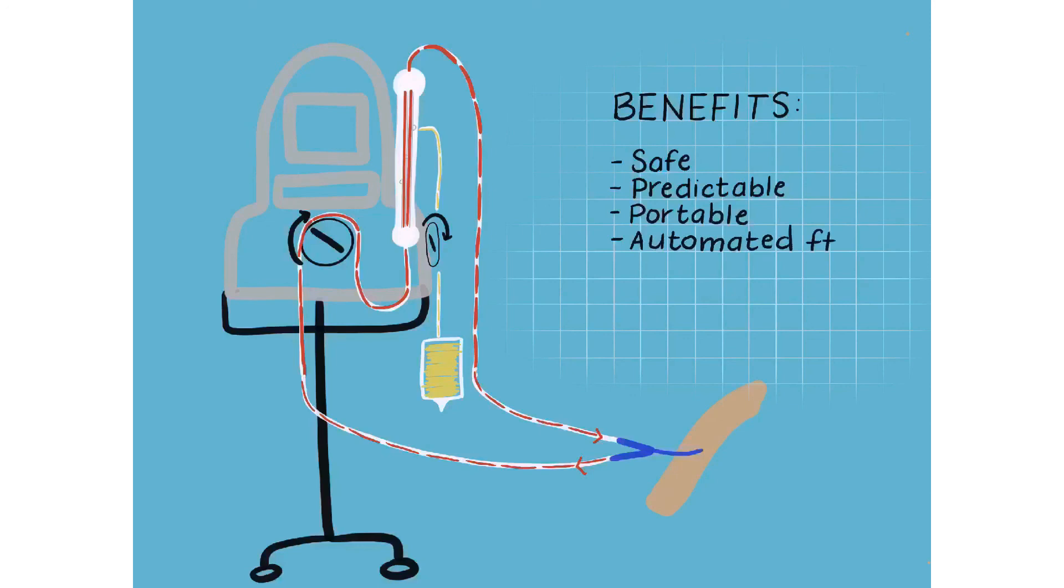The device is portable so patients can get up and move around. There are some automated features, including a hematocrit limit, where the UF pump will turn off if a limit is exceeded. And it's a small volume of blood outside of the patient's body, only 35 milliliters.